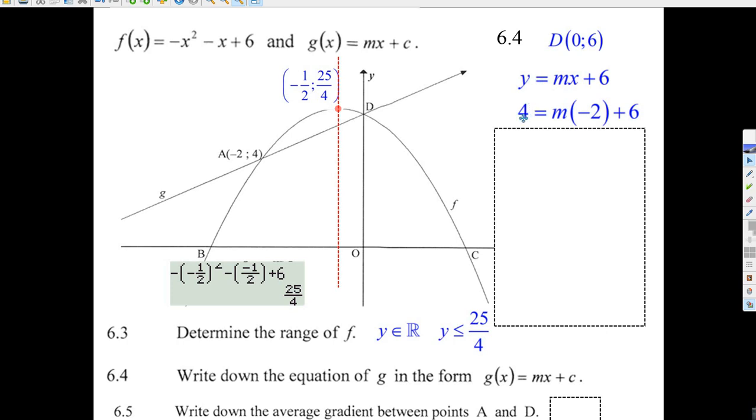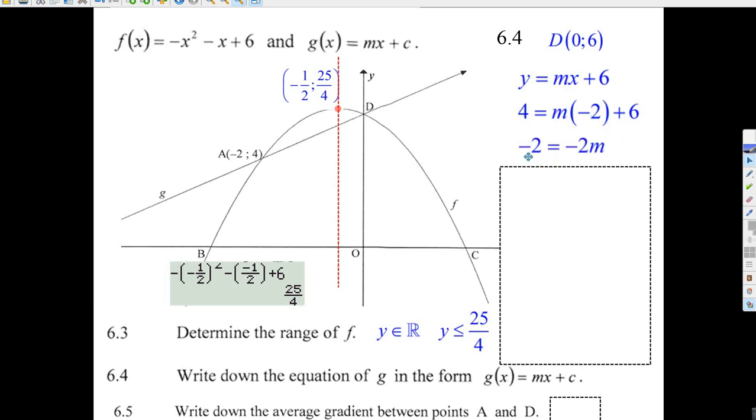Like when we were finding the axis of symmetry for the hyperbola, we just substituted in where the asymptotes crossed. Anyways, if we substitute in that point right in there, now we just solve. We get minus 2m, take away 6 from both sides, it's minus 2. So m equals 1.